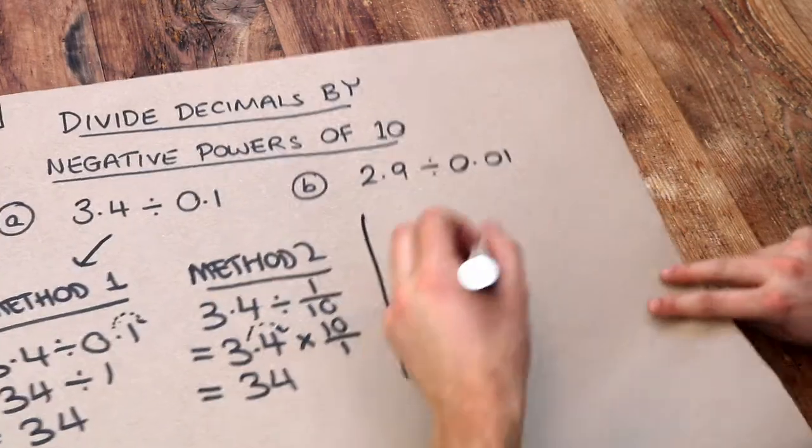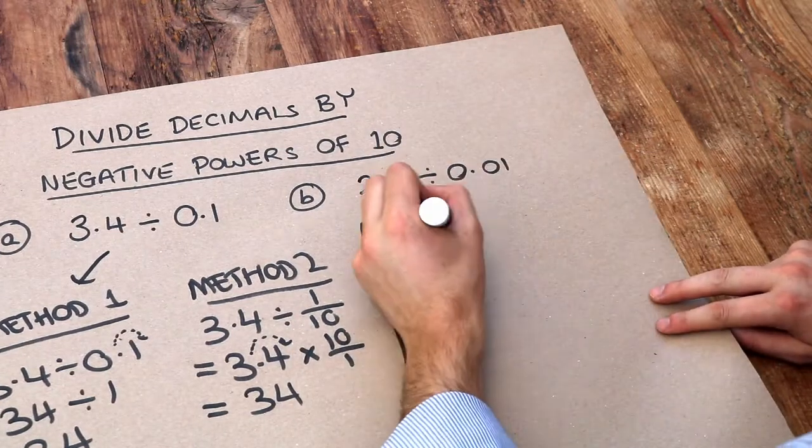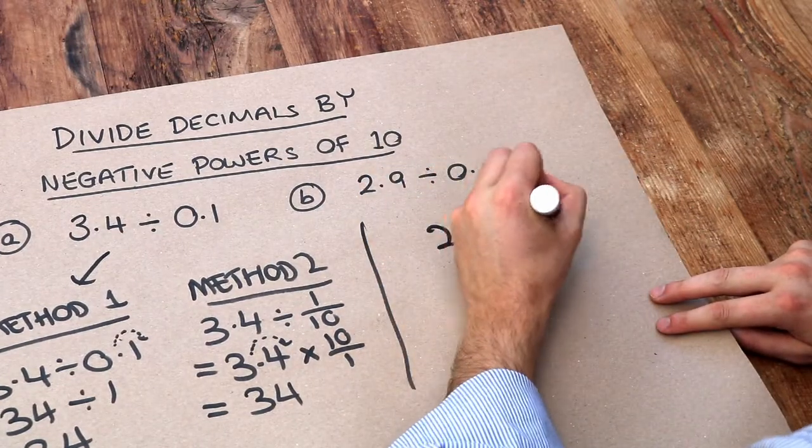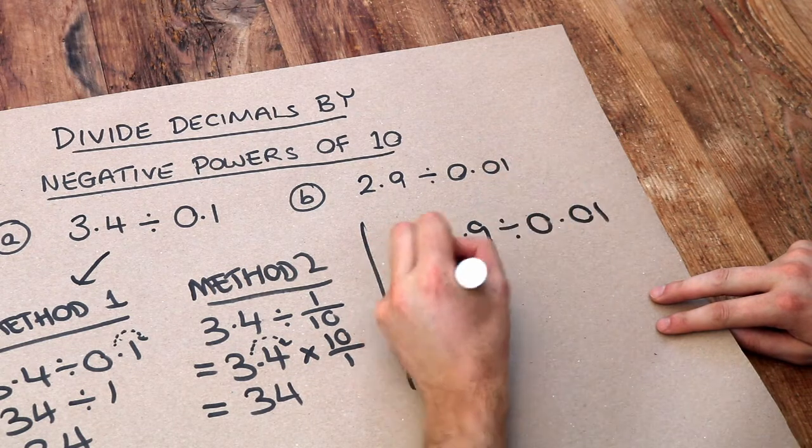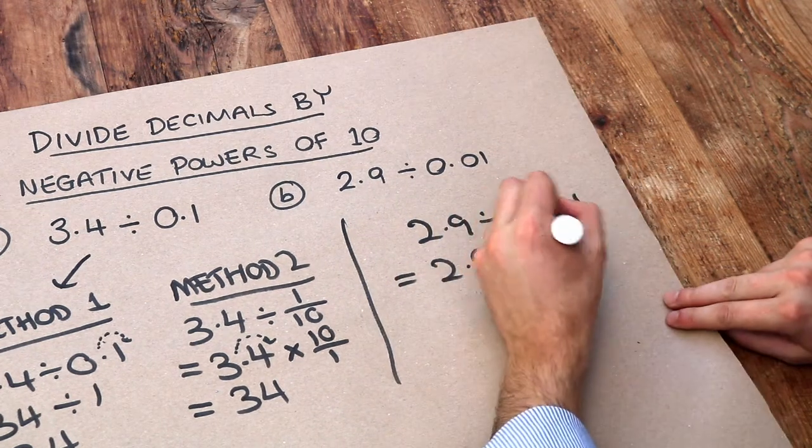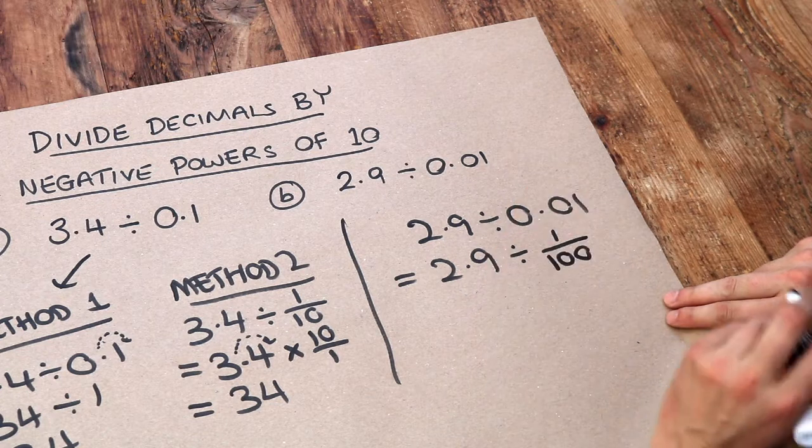Let's do a similar thing here. I'm going to use method two actually for this. So we've got 2.9 divided by 0.01, and that's the same as 2.9 divided by a hundredth, because 0.01 is a hundredth.